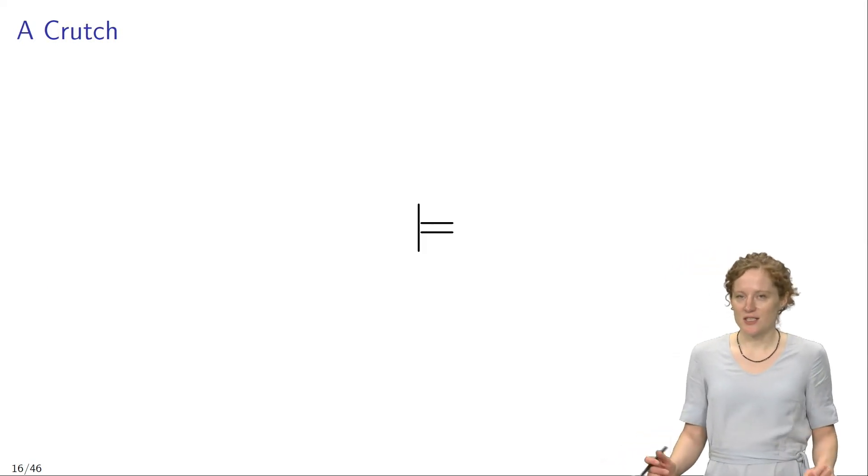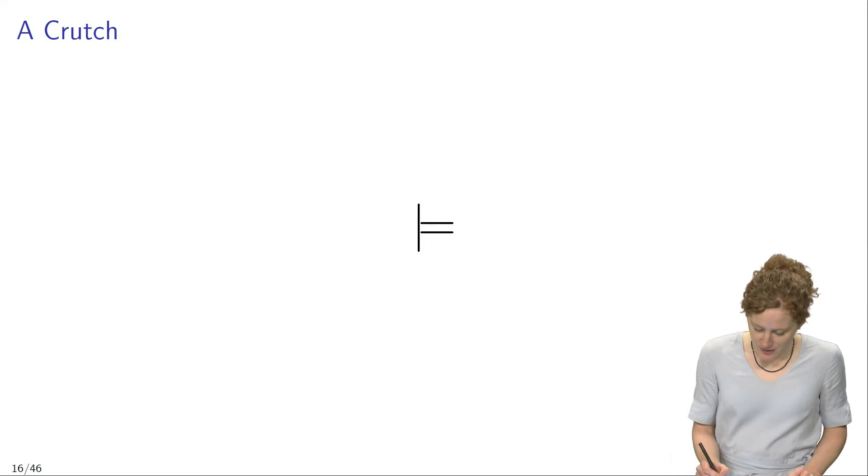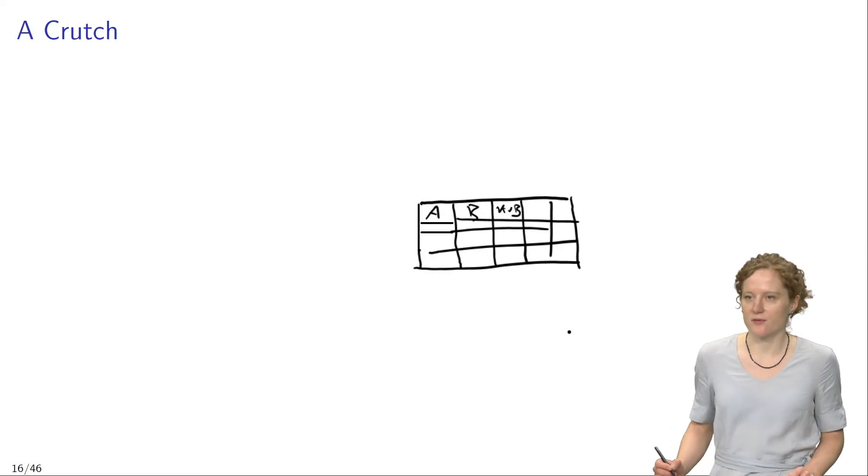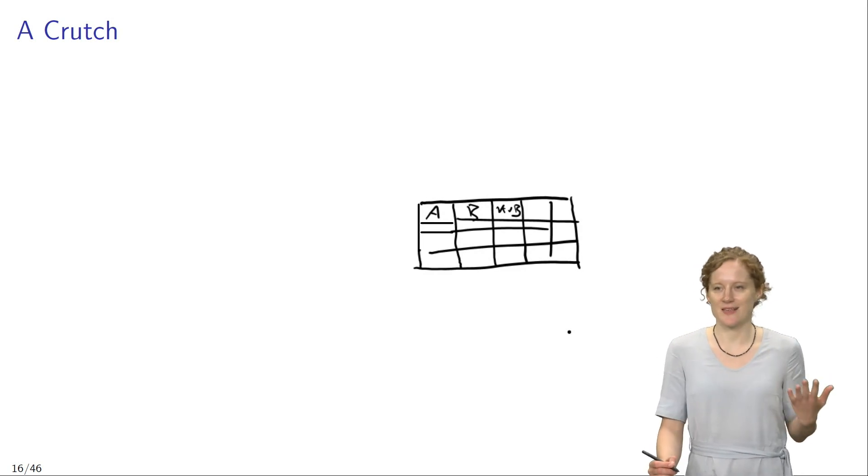Here's a little crutch to help you remember the difference between the turnstile and the double turnstile. This is the double turnstile and you can see it actually looks a little bit like a part of a table. You can kind of extend it like this, and now it looks like a truth table with the different rows: A, B, A or B and so on and so forth. The double turnstile looks a little bit like a part of a truth table. Just think of this image when you try to remember the meaning of the double turnstile. The double turnstile always has to do with truth tables.